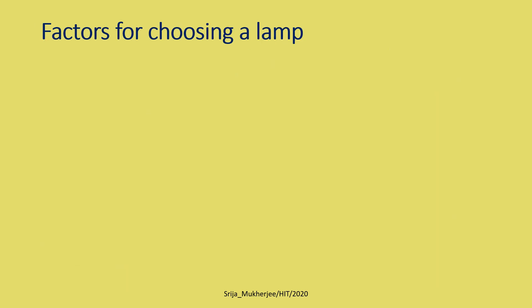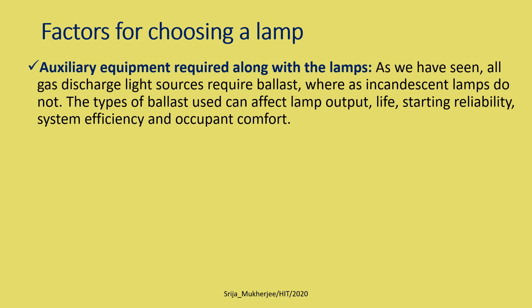The next factor for choosing a lamp during the design of interior lighting is the auxiliary equipment required along with the lamps. As we have seen, all gas discharge light sources require a ballast, whereas incandescent lamps do not. The type of ballast used can affect lamp output, life, starting reliability, system efficiency, and occupant comfort. The ballast, which is auxiliary equipment, regulates the current and supplies the high voltage for the initial discharge.